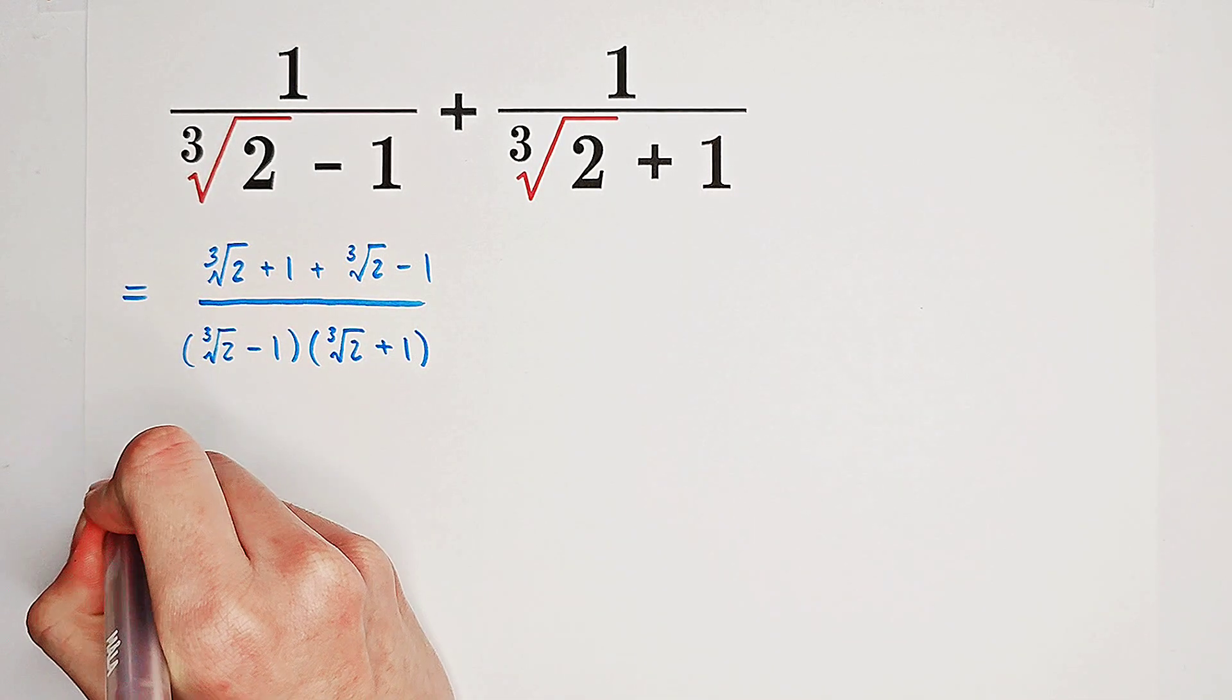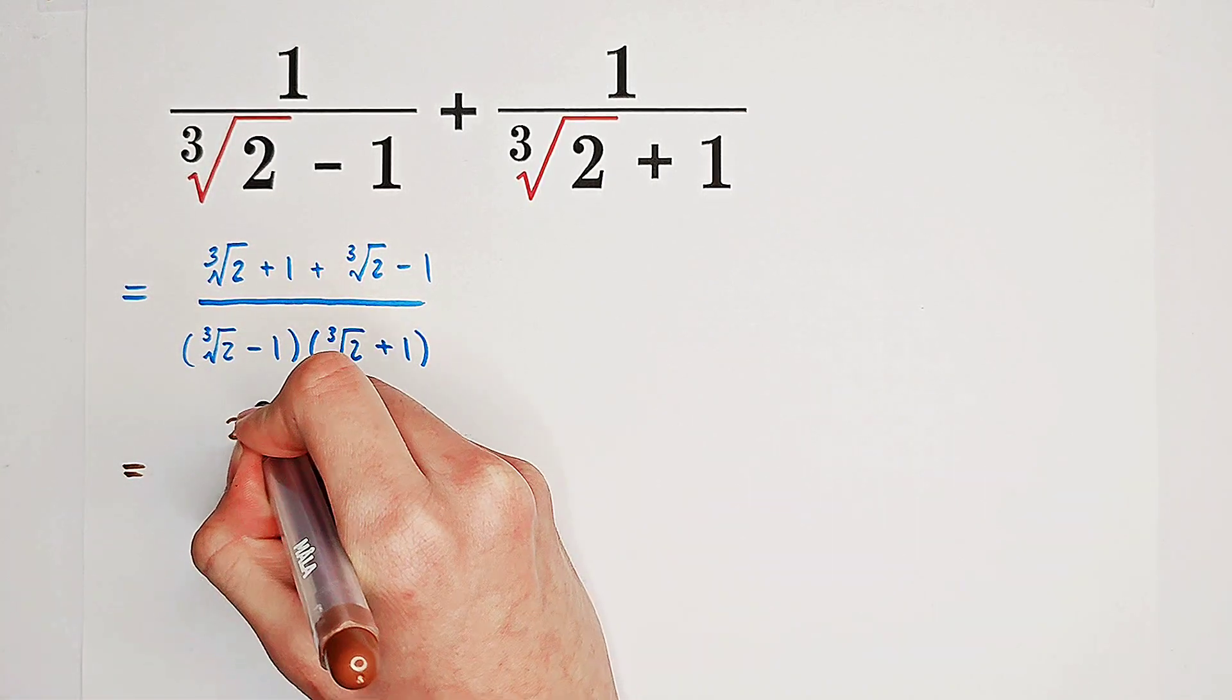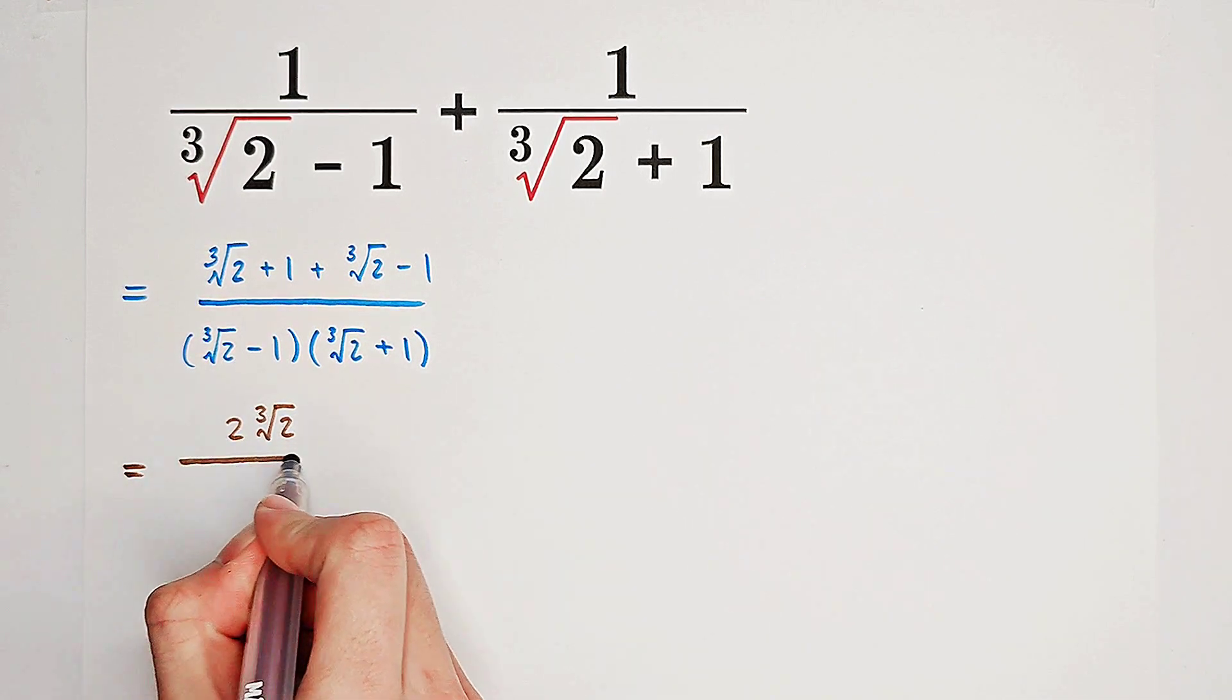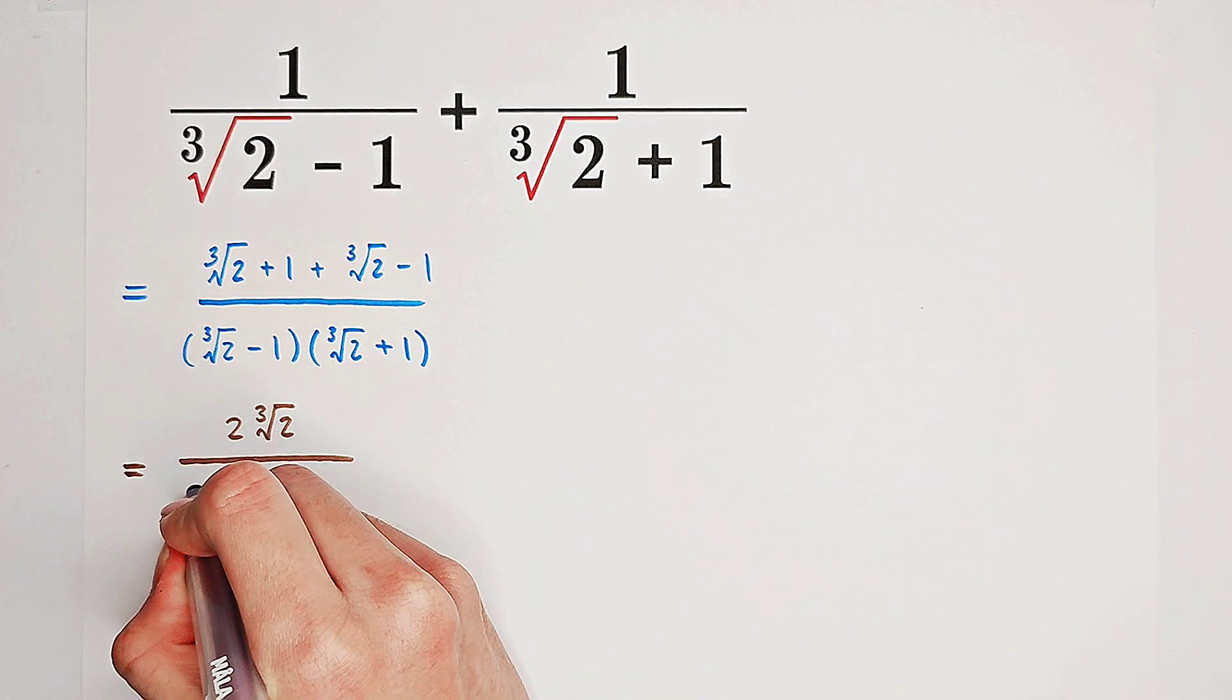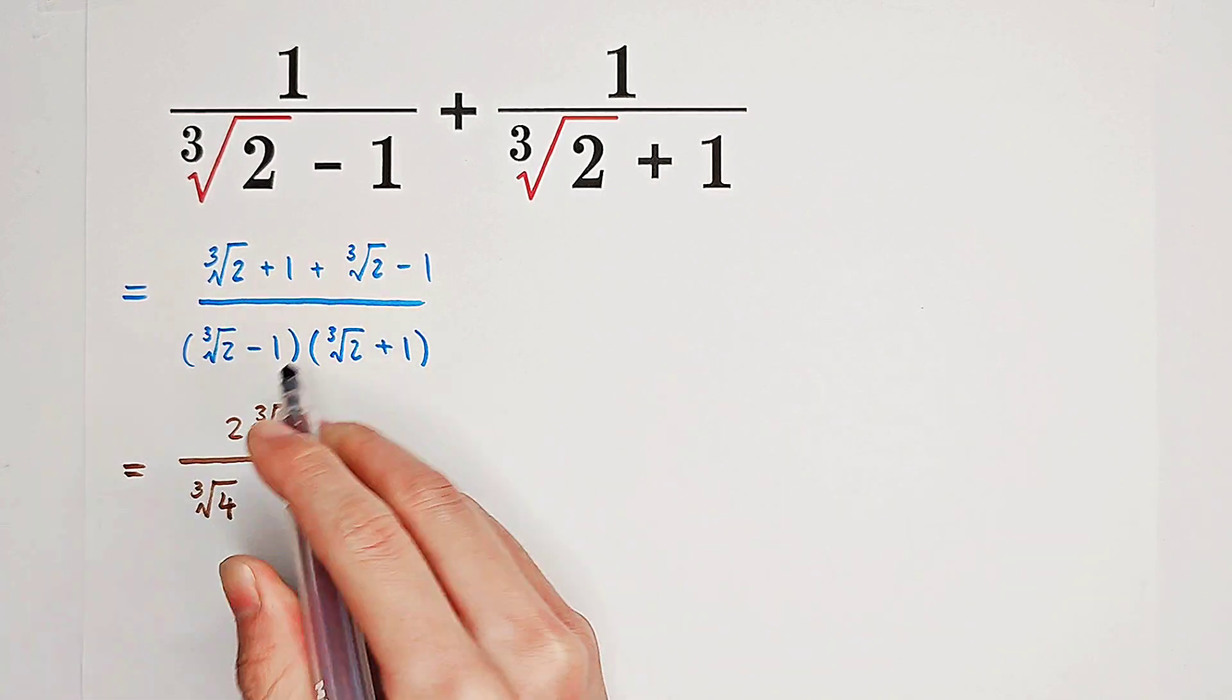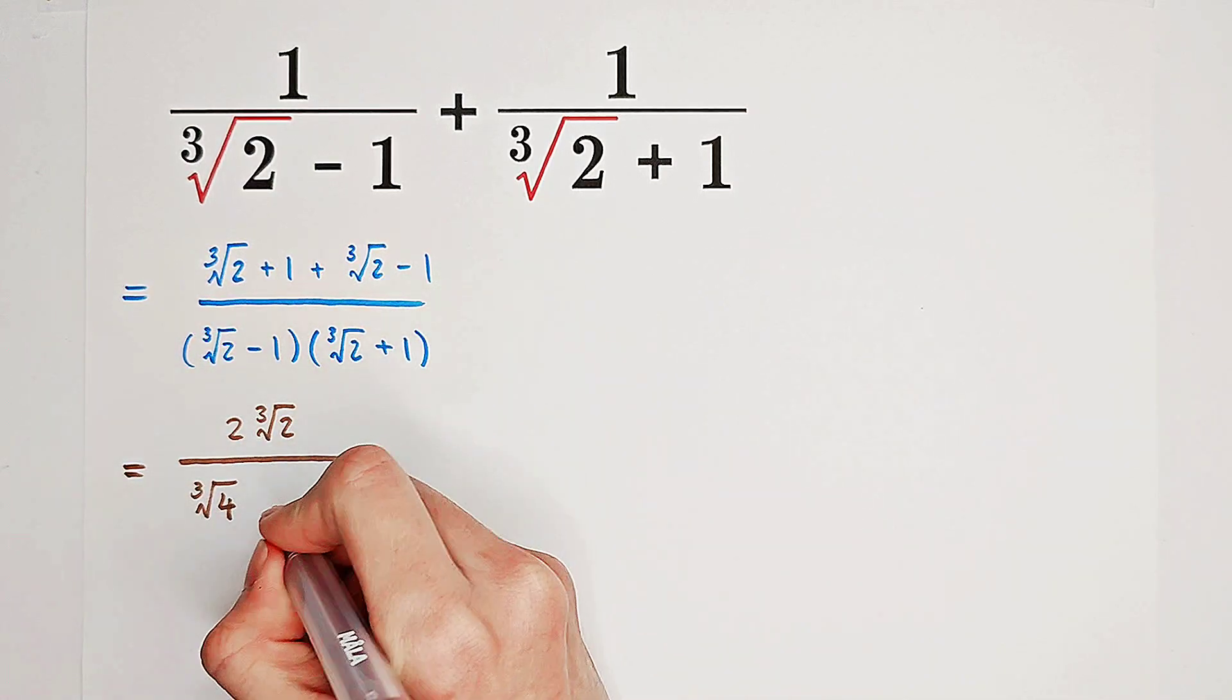So then, look, our numerator is 2 times the cube root of 2. And our denominator is cube root of 2 times cube root of 2, it is cube root of 4. Minus cube root of 2 plus cube root of 2 is 0, and then minus 1, so it is this one.